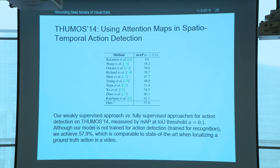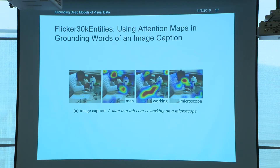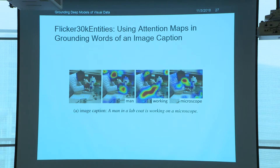We also explore grounding in image captioning. On the left we see an image and we have a captioning model — a CNN-LSTM model. The caption produced is: a man in a lab coat is working on a microscope. We ask the model, why did you decide to predict the word 'man'? The red, most salient region highlights the person's head. Then we ask why did you predict the word 'working'? It highlights the bench area. And why did you think there's a microscope? It highlights the microscope. We also show some localization results in our paper.